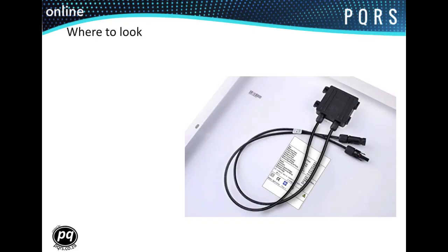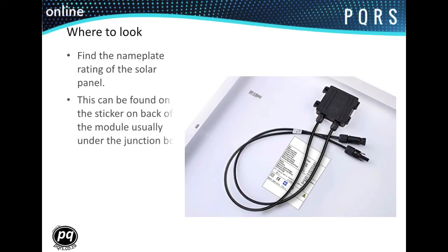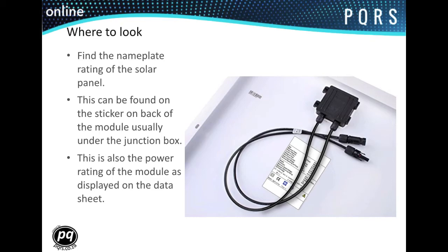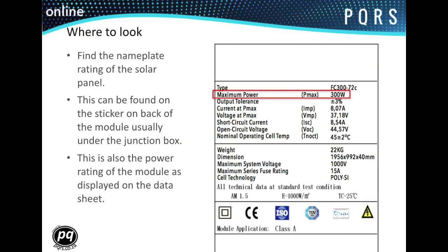In order to calculate the energy that can be generated by a solar module, first we find the nameplate rating of the solar panel. This can be found on the sticker on the back of the module, usually under or in the vicinity of the junction box. The information displayed on the nameplate is a condensed version and should match the module's data sheet. Once you have found this value, you simply identify the area of the installation, estimate the number of peak sun hours, and it should be relatively straightforward to do the rest of the calculation.